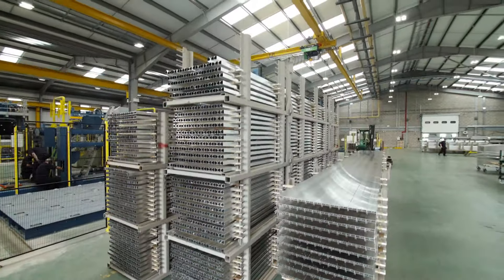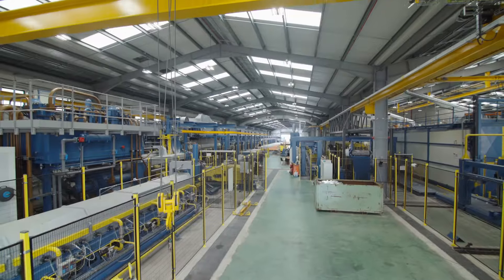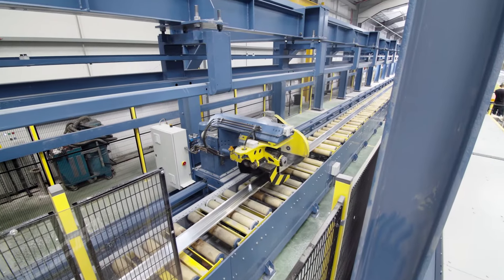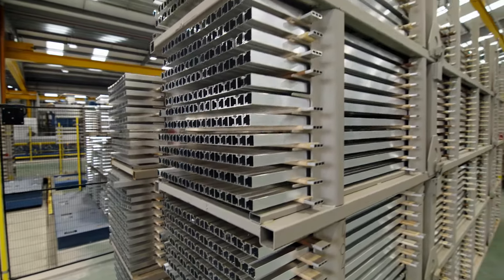This growth has been fueled by the installation of our vertical paint line in 2008, followed by our first extrusion press and more recently with the addition of a second press doubling capacity to over 16,000 tons per year.